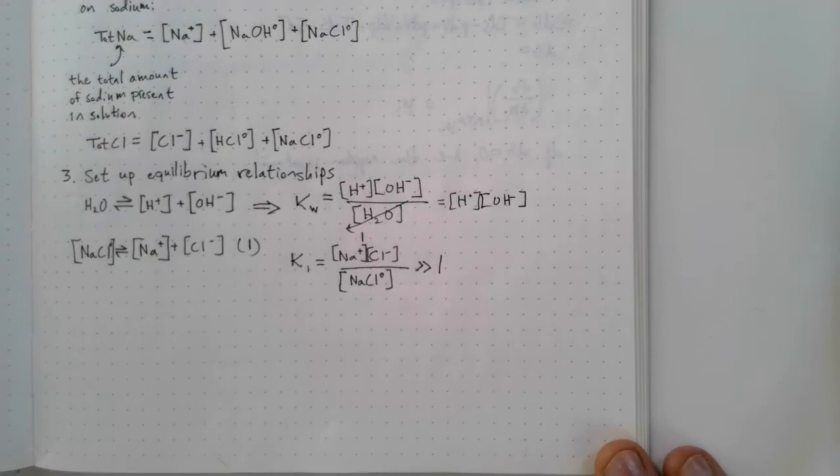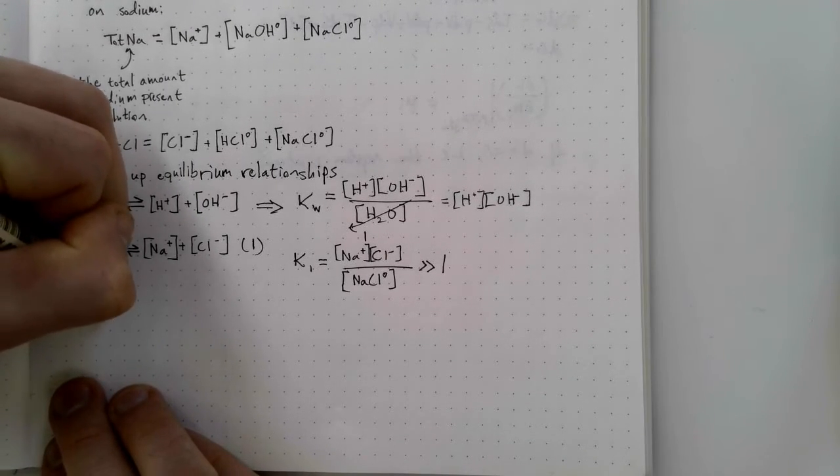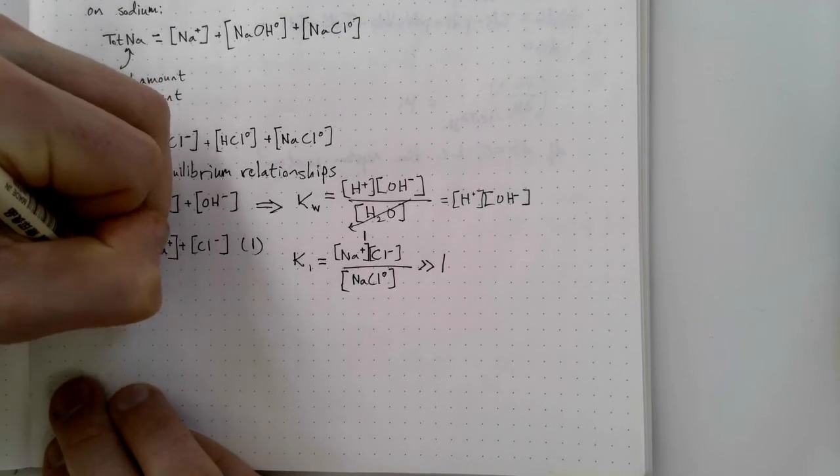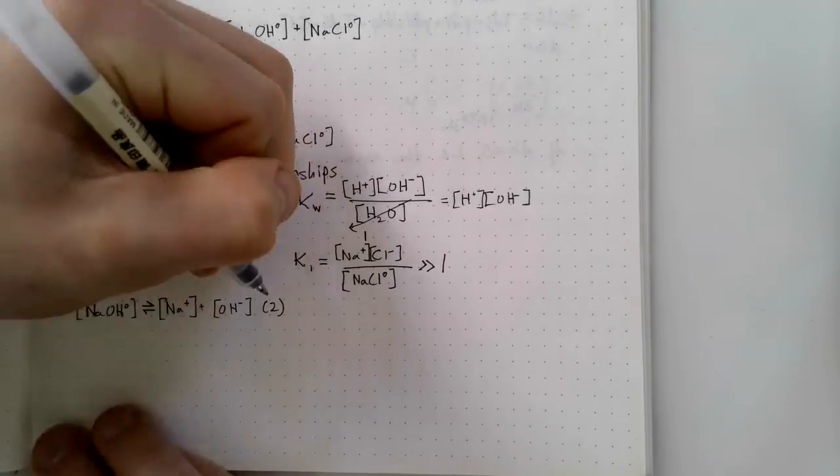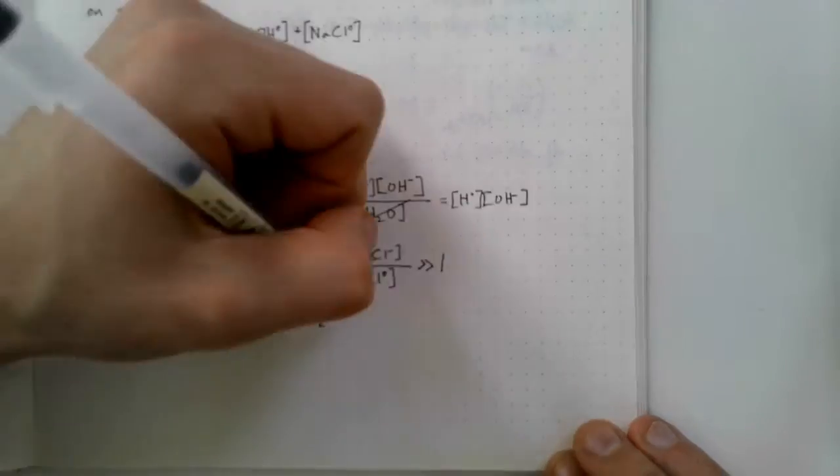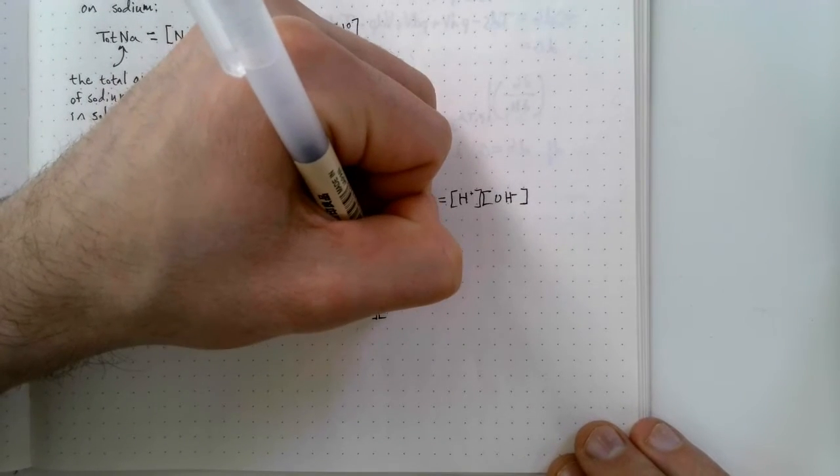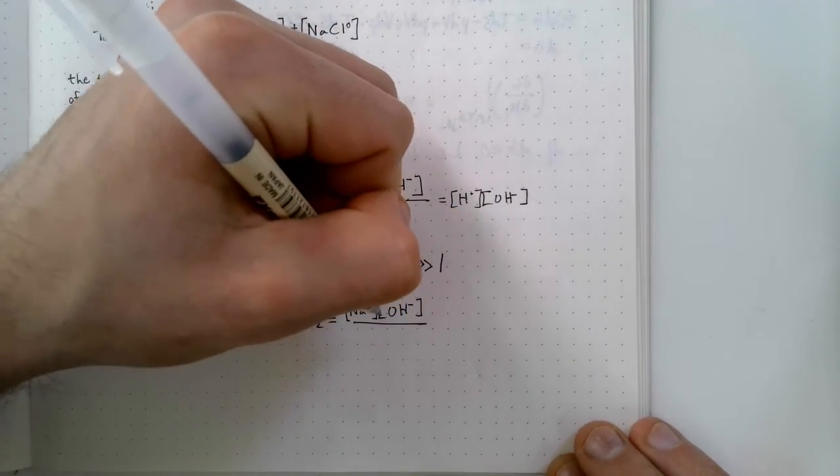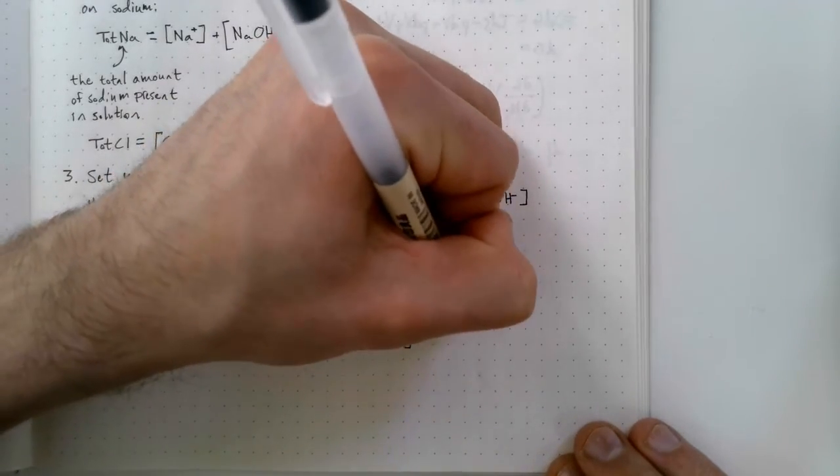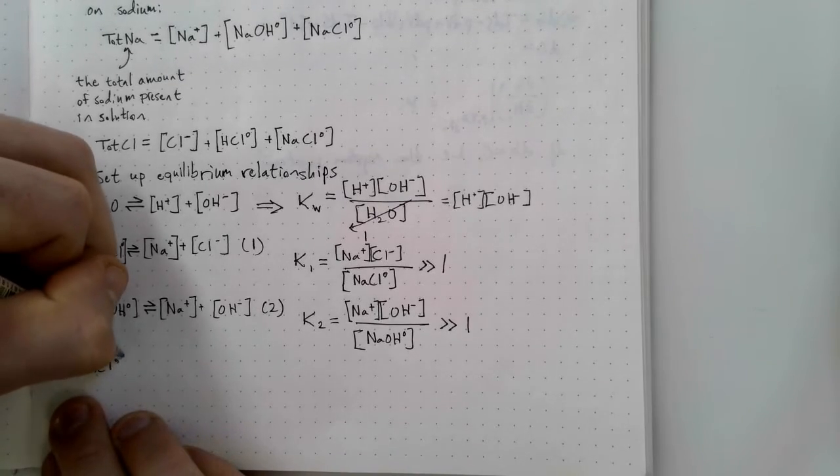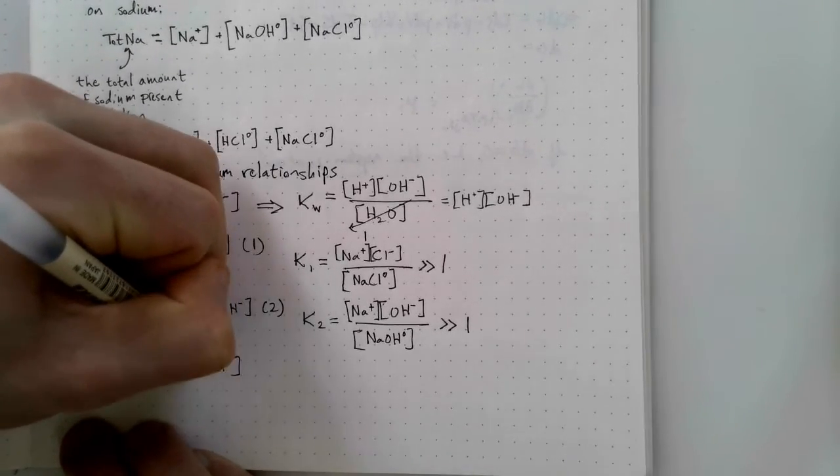I'm calling this reaction one and the equilibrium relationship is the product of the sodium and chloride ions over the dissolved but undissociated pair NaCl0. However, the overwhelming majority of NaCl in the solution will dissociate into sodium and chloride ions separately. So K1 is much, much greater than one. I can perform a similar analysis for sodium hydroxide. I label this one chemical reaction two arbitrarily. Once again, the equilibrium relationship K2 is equal to the sodium ion times the hydroxide ion concentration divided by the sodium hydroxide dissolved but still associated pair. But again, sodium is much more prevalent in solution as an ion than as the undissociated pair NaOH. So K2 is much, much greater than one as well.